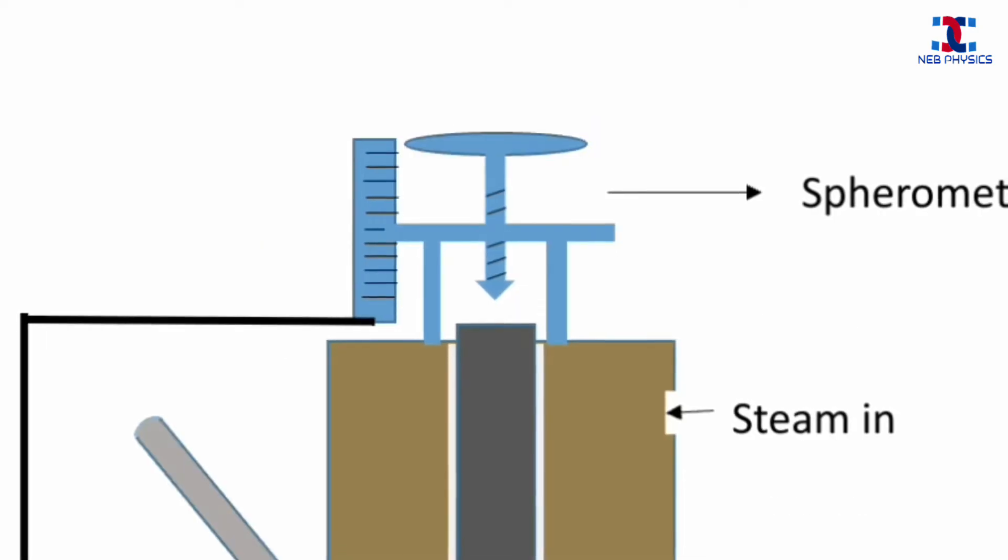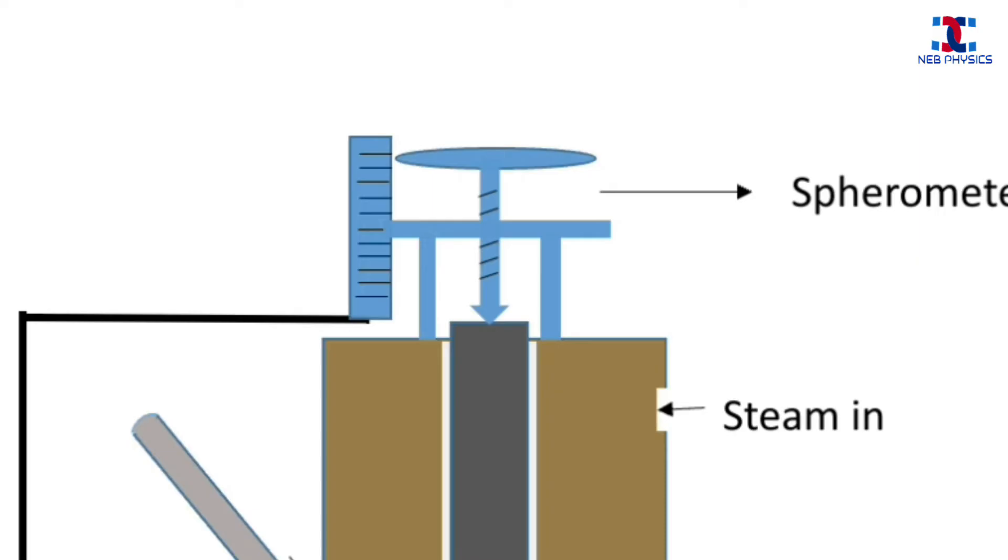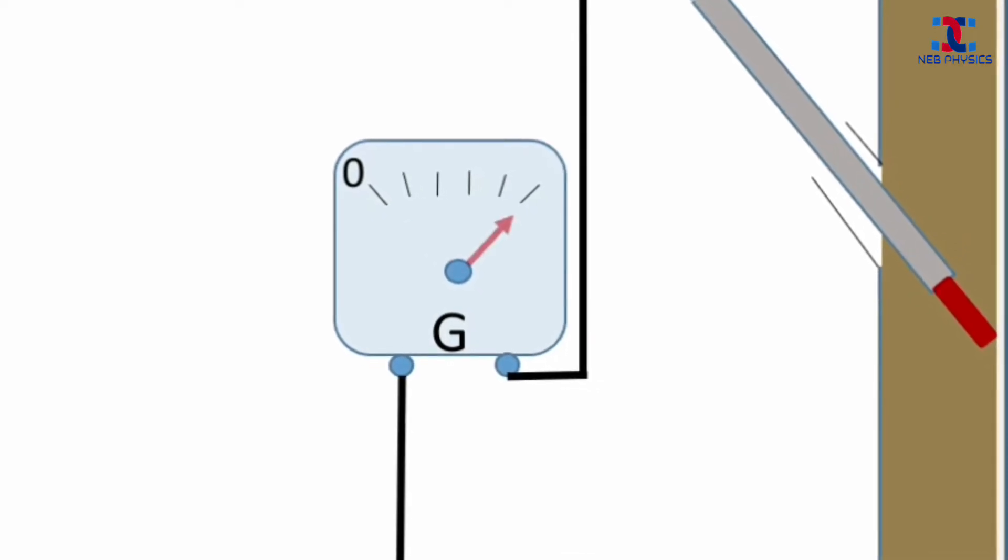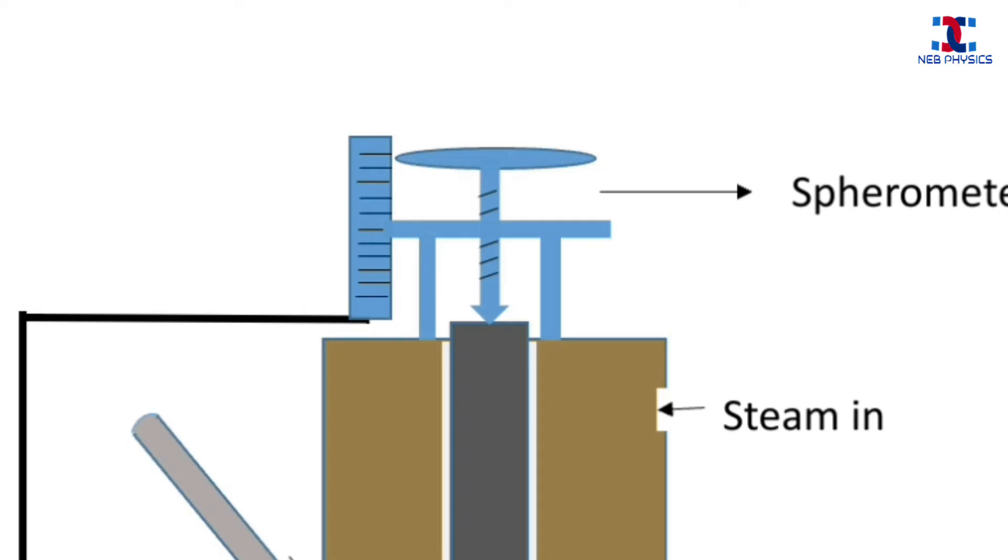Now the spherometer is rotated until the screw comes in contact with the upper end of the metal rod and the galvanometer shows the deflection. At this point, the reading of spherometer is noted as initial reading.